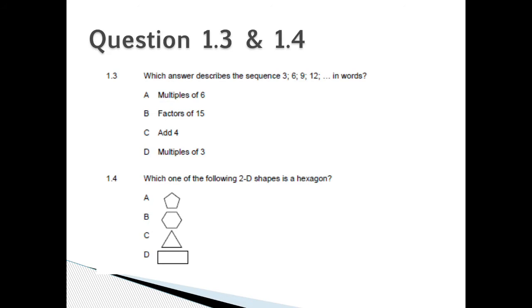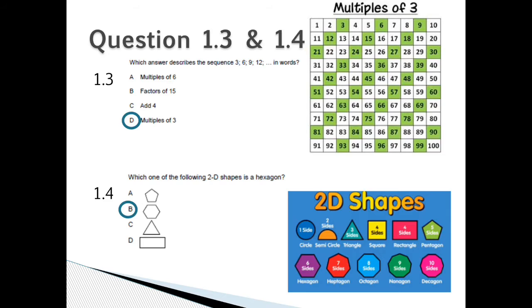Question 1.4: Which one of the following 2D shapes is a hexagon? The first shape has 5 sides, the second one, which is B, has 6 sides, the third one is a 3-sided shape, and the fourth one has 4 sides. Question 1.3: 3, 6, 9, 12 in words would be multiples of 3, which is D.